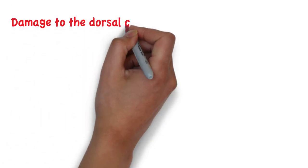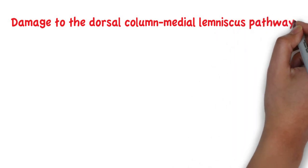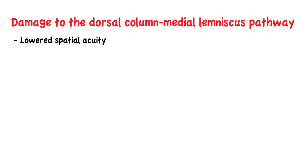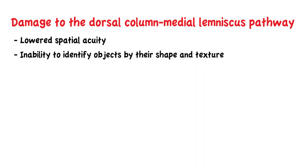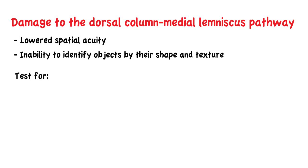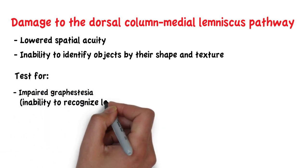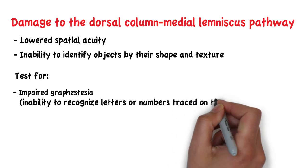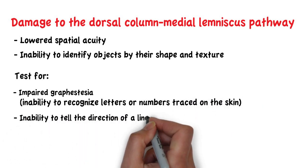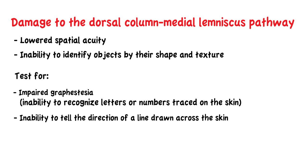Damage to the dorsal column medial lemniscus pathway may result in lowered spatial acuity, as well as the inability to identify objects by their shape and texture, since the patient loses fine touch, proprioceptive and vibratory sensations. Clinically, we may test for impaired graphesthesia — the inability to recognize letters or numbers traced on the skin — or for the loss of the ability to tell the direction of a line drawn across the skin.